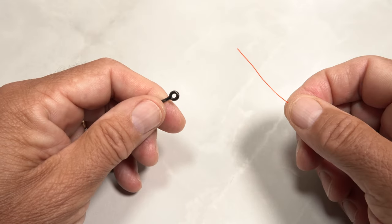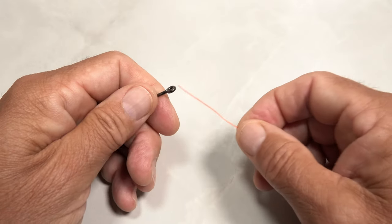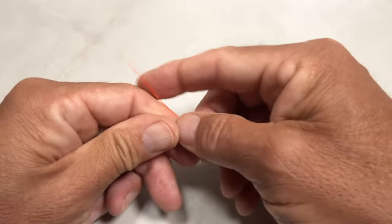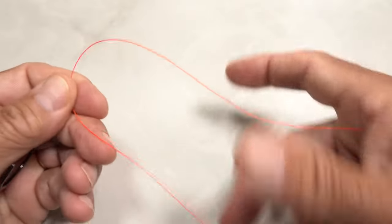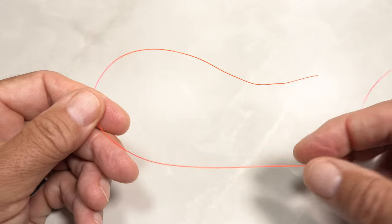To tie a clinch knot, insert the end of the line through the eye of the hook. The shorter end that passes through the eye is called the tag end, while the end that goes back to the reel is called the standing line.